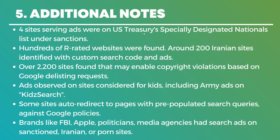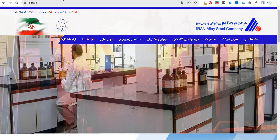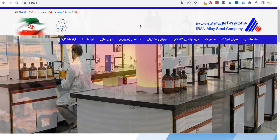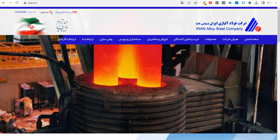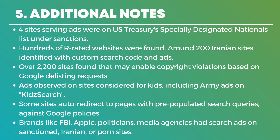Some additional notes from the study: four sites were serving ads on the US Treasury Specially Designated Nationals list under sanctions. Hundreds of R-rated websites were found, and around 200 Iranian websites were identified with custom search code and ads — including an Iran alloy steel company that is under US sanctions, which may still be running Google Search Partners. Over 2,200 sites were found that may enable copyright violations, and ads were observed on sites considered for kids — for example, the Army advertising on a kids' search engine with ads that aren't really age-appropriate. Some websites auto-redirect to pages with pre-populated search queries, which is against Google Ads policies. Brands like the FBI, Apple, politicians, and media agencies had search ads on sanctioned Iranian or R-rated websites.